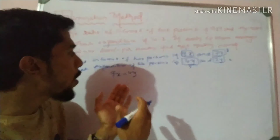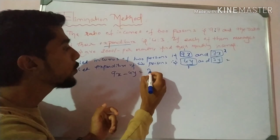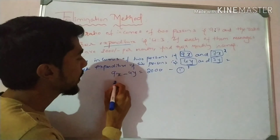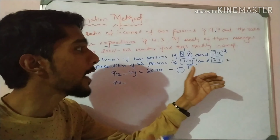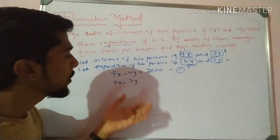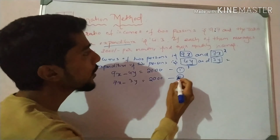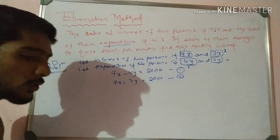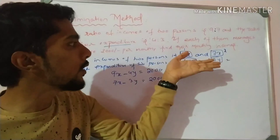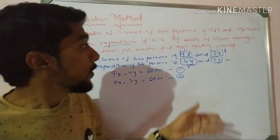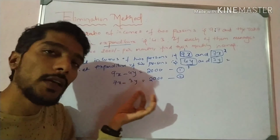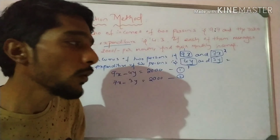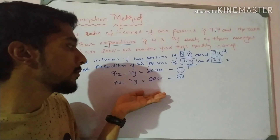Next, take the second case, which is expenditure. Let the expenditure of two persons be 4y and 3y respectively, since the ratio is 4 is to 3. y is the common ratio between the expenditures. So 9x is the income of the first person and 4y is the expenditure of the first person. 7x is the income of the second person and 3y is the expenditure of the second person.